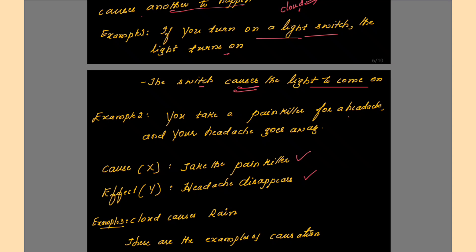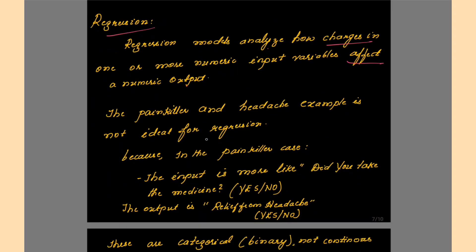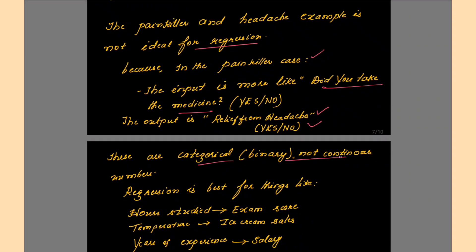You cannot use the painkiller example directly for regression. Regression models analyze how changes in one or more numeric input variables affect a numeric output. The painkiller example is not ideal because the input — did you take the medicine — is categorical, not continuous. You are saying whether you took the medicine or not: yes or no. The output — whether you got relief from the headache — is also yes or no. These are categorical values, not continuous numbers. That is why this example cannot be used for regression.